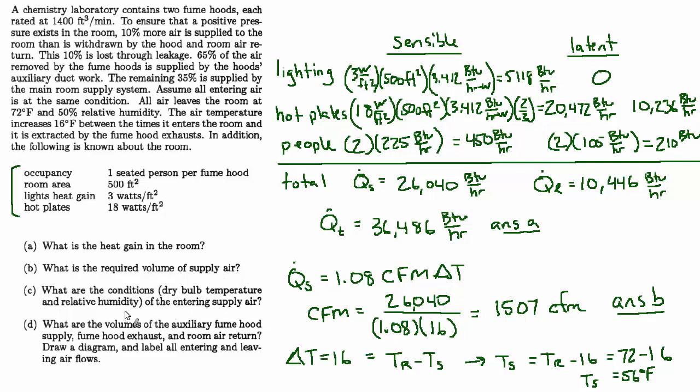But they also want to know the relative humidity, and that is considerably more interesting to calculate. Because we assumed that the required supply volume was based on the sensible load, and now we have to figure out how dry that supply air would have to be in order to absorb the amount of water vapor that's being added to the air by the latent load that we have, such that when it leaves it has these conditions: 72 degrees and 50% relative humidity.